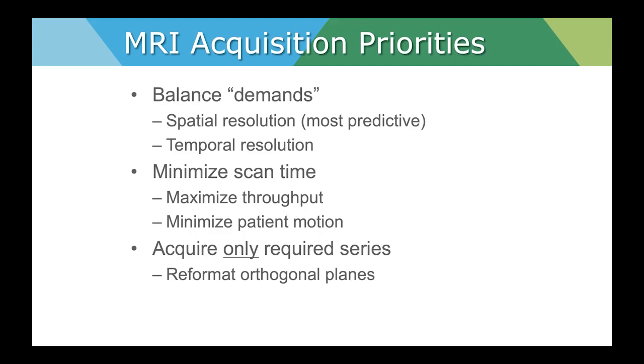For example, we can acquire images in a sagittal plane and reformat in an axial plane, so we don't need to acquire both.